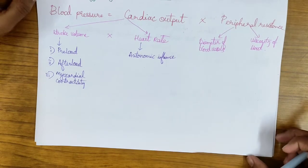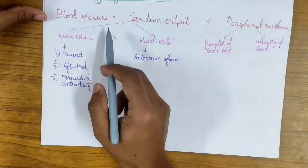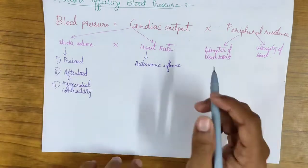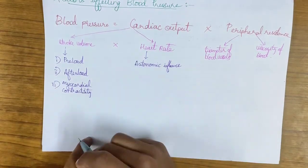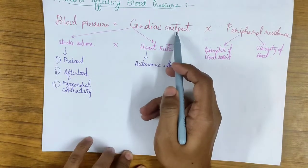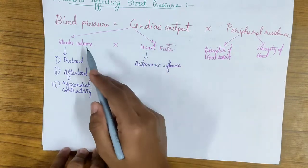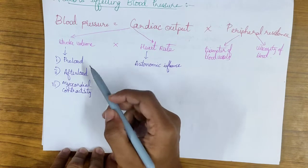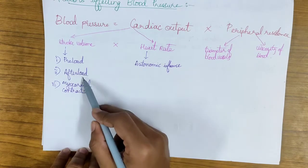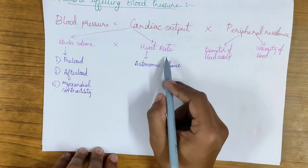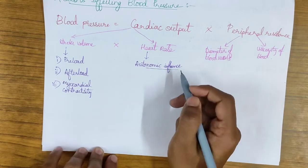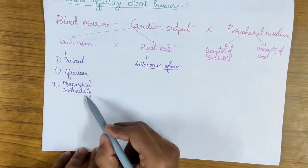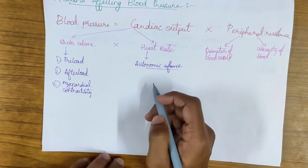The next topic is factors affecting blood pressure. As stated, Blood Pressure equals Cardiac Output multiplied by Peripheral Resistance. The factors affecting cardiac output are stroke volume and heart rate. Under stroke volume, the factors are preload, afterload, and myocardial contractility. Heart rate depends on autonomic influence — that is parasympathetic and sympathetic influence. You can check this in detail in my video on cardiac output part 2.